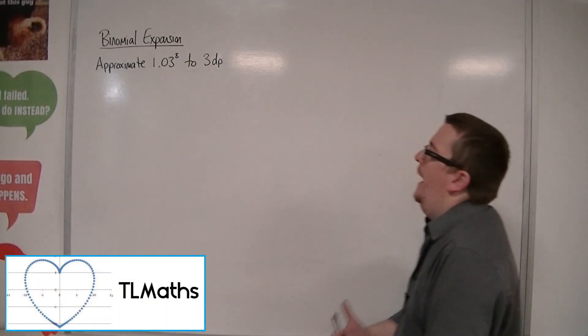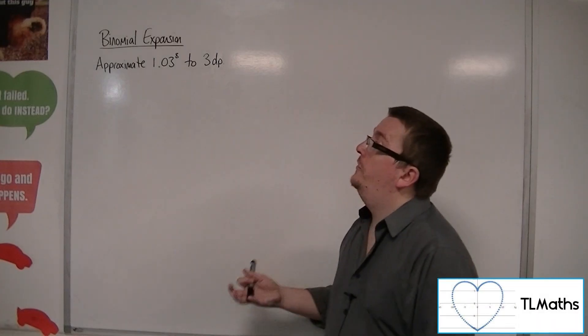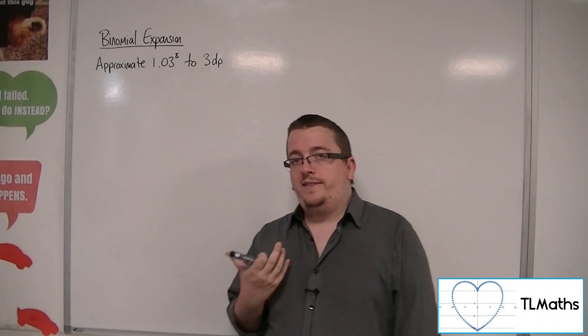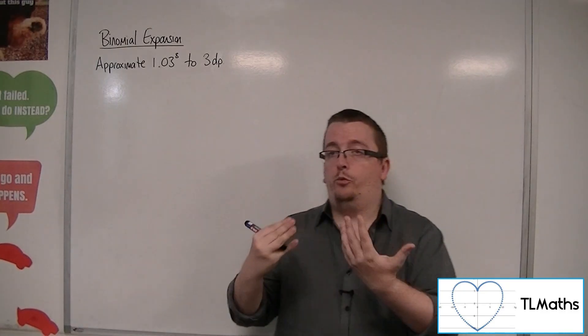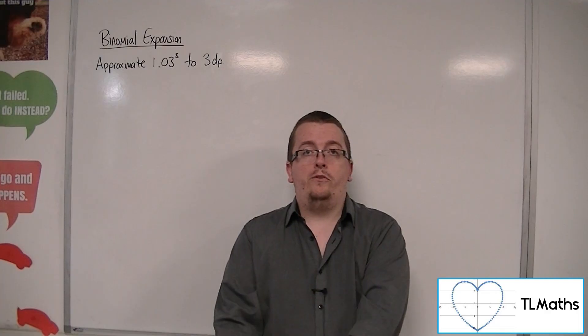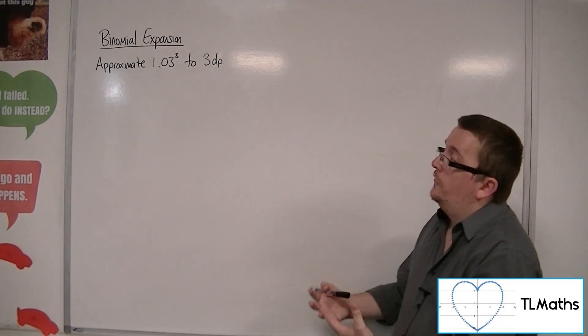Okay, so how does a calculator work out things like 1.03 to the 8 very quickly? Now, it doesn't do 1.03 times 1.03, work out the answer, then multiply that by 1.03, then multiply that by 1.03, etc. It doesn't do that.